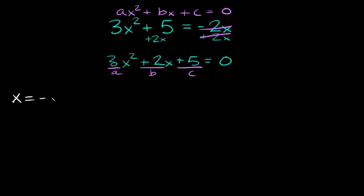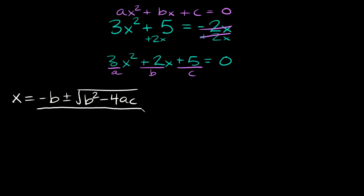x is equal to negative b plus or minus the square root of b squared minus 4ac, all over 2a. So this is the quadratic formula, and now all we have to do is plug in our a, b, and c numbers into the formula.